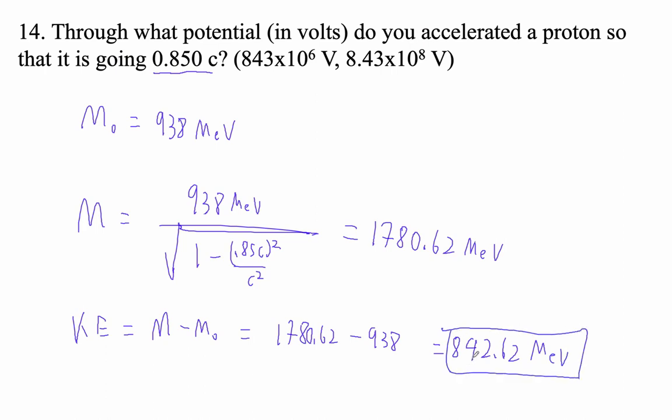Now, how do you get 842.62 million electron volts of kinetic energy? You accelerate an electron through 842.62 million volts because it has one electron charge.